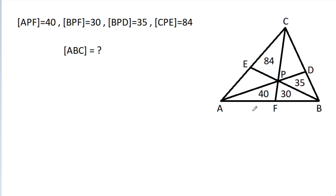In this video, we have been given that area of APF is 40, area of BPF is 30, area of BPD is 35, and area of CPE is 84. Then we have to find the area of ABC.